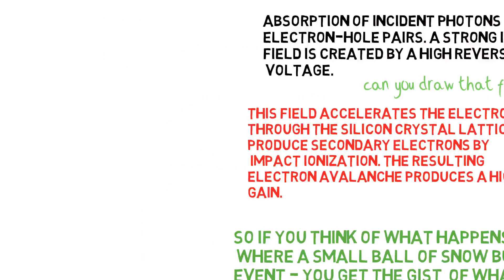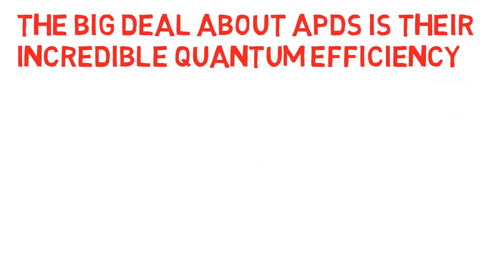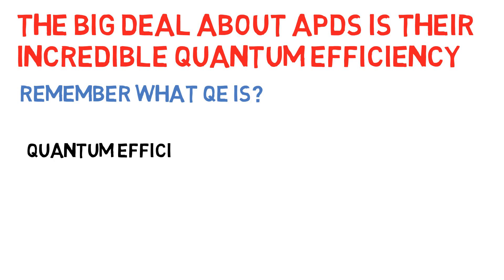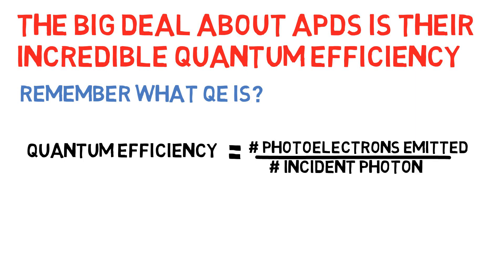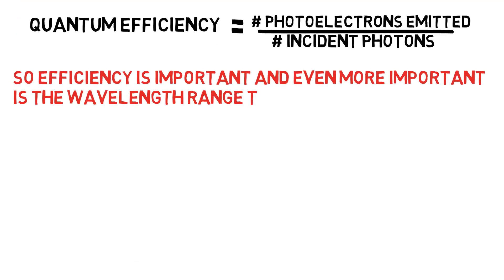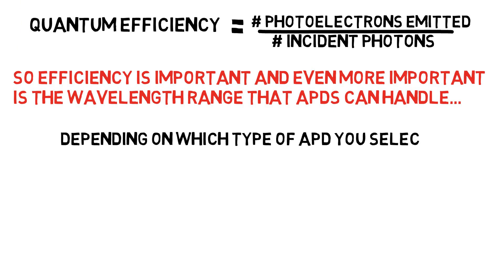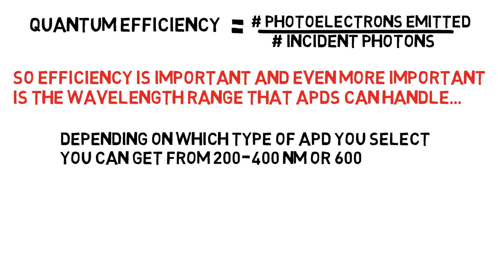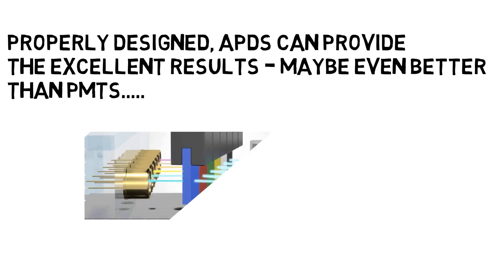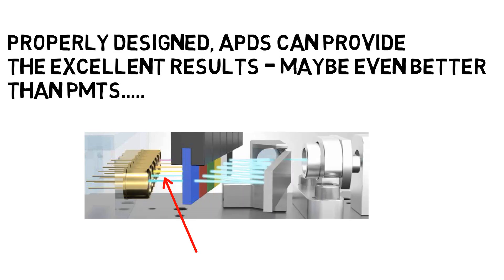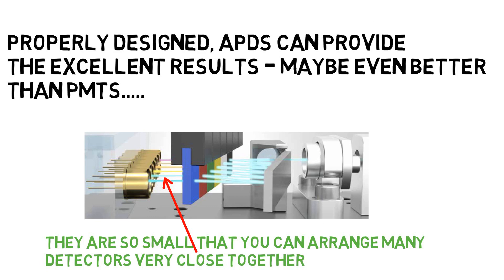The big deal about APDs is their incredible quantum efficiency. Quantum efficiency is the photoelectrons emitted divided by the incident photons. Efficiency is important, and even more important is the wavelength range that APDs can handle. Depending upon which type of APD you select, you can get coverage from 200 to 400 nanometers, or 600 to 1,000 nanometers. Properly designed, APDs can provide excellent results — maybe even better than PMTs. APDs are also so small that you can arrange many detectors very close together.